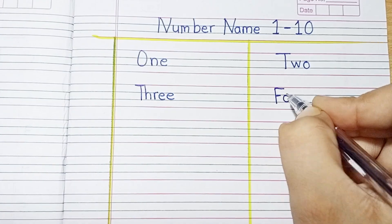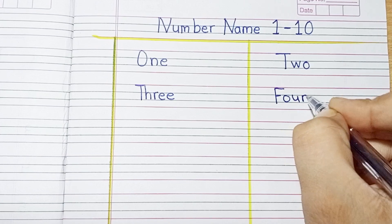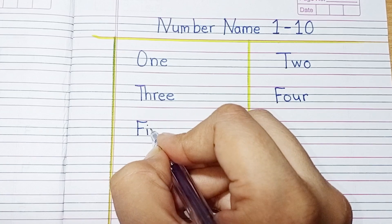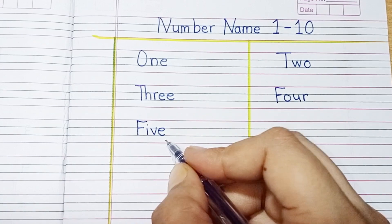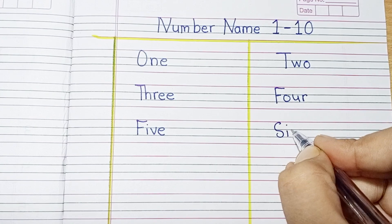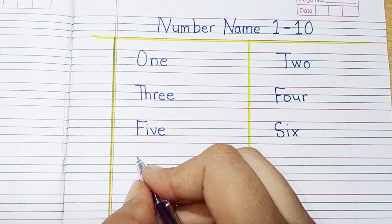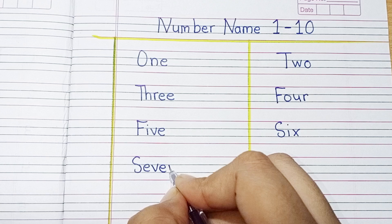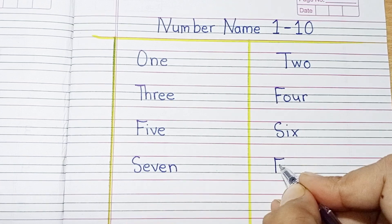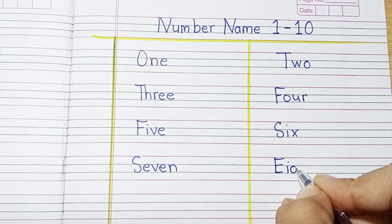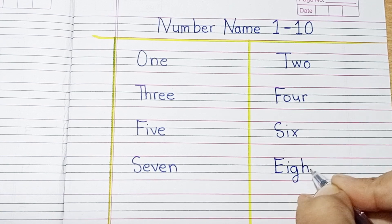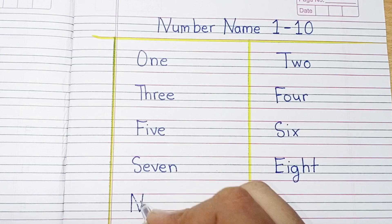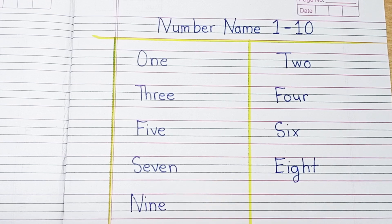F-O-U-R: 4. F-I-V-E: 5. S-I-X: 6. S-E-V-E-N: 7. E-I-G-H-T: 8. N-I-N-E: 9.